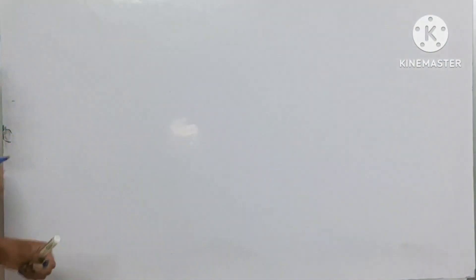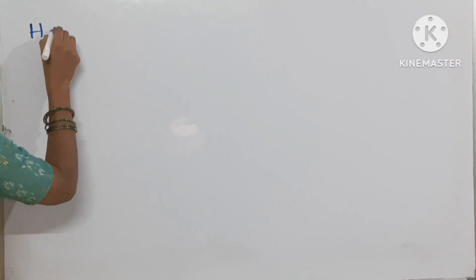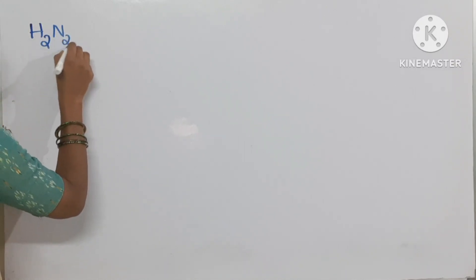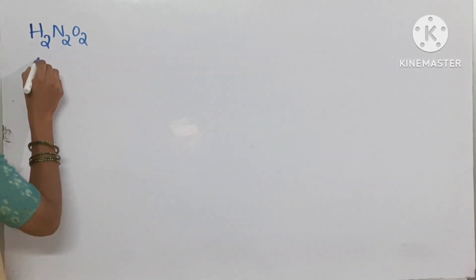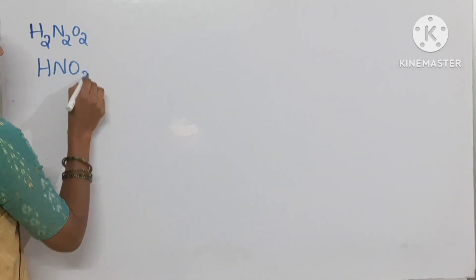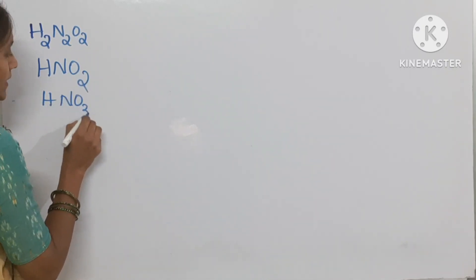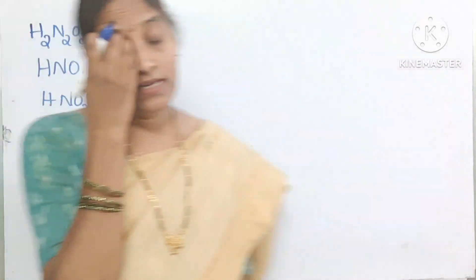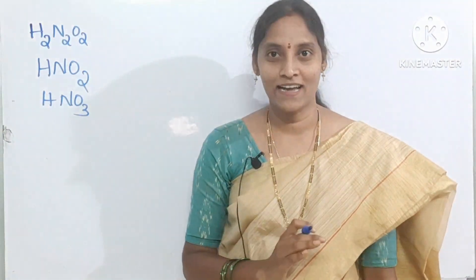Now we will start our topic: oxoacids of nitrogen. Nitrogen can form hyponitrous acid H2N2O2, nitrous acid HNO2, and nitric acid HNO3.